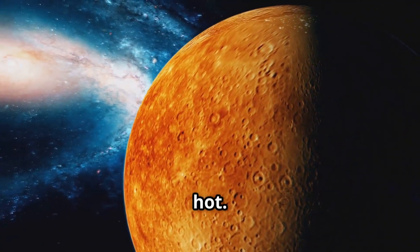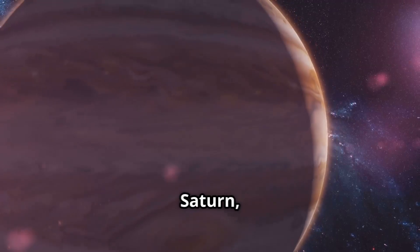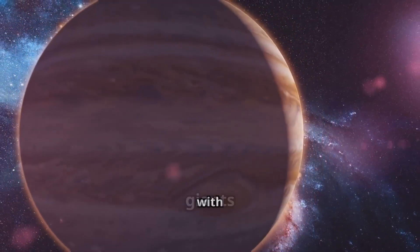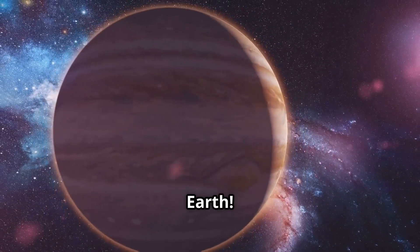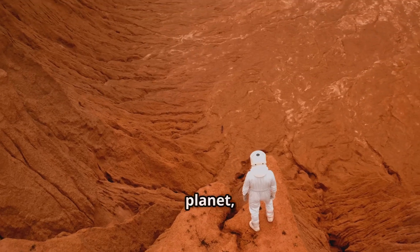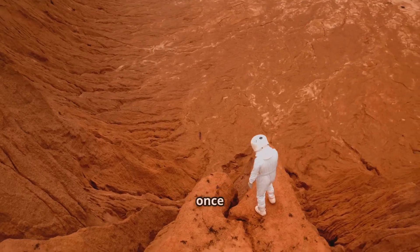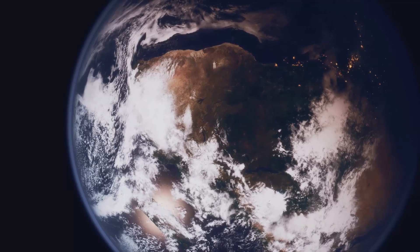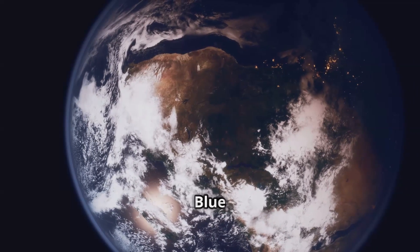Some planets like Mercury and Venus are closer to the Sun and are very hot. Others like Jupiter and Saturn are huge gas giants with swirling storms bigger than Earth. Then there's Mars, the red planet, which scientists believe might have once had life.